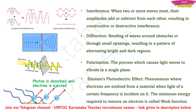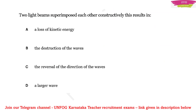With this knowledge, we can answer a question like this: Two light beams superimposed on each other constructively — what does this result in? The options are: loss of kinetic energy, the destruction of waves, the reversal of direction of the waves, or option D, a larger wave. It would be a great idea to pause the video and try to answer. The answer is a larger wave, because when two light beams get added up, we get constructive interference.